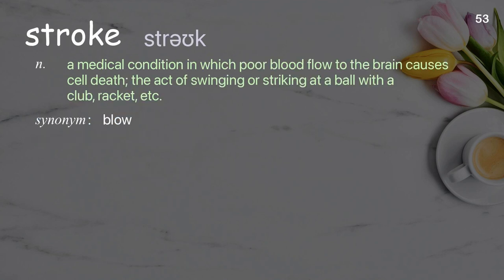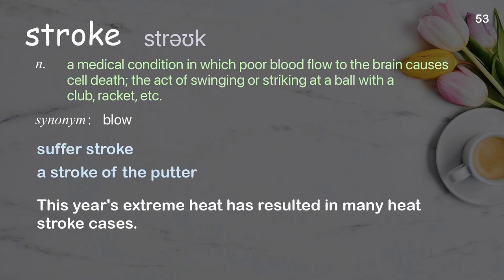Stroke: a medical condition in which poor blood flow to the brain causes cell death; the act of swinging or striking at a ball with a club, racket, etc. Examples: suffer a stroke, a stroke of the putter. This year's extreme heat has resulted in many heat stroke cases.